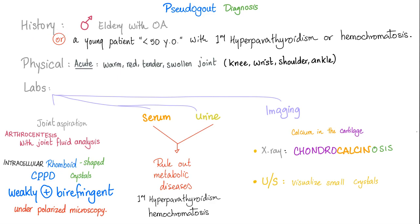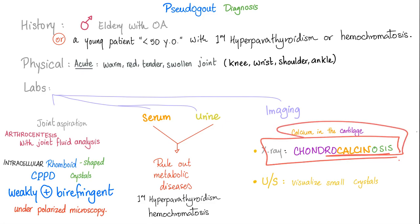How do you diagnose pseudogout? History: either an elderly patient with osteoarthritis — usually male — or a young patient (under 50) with primary hyperparathyroidism or hemochromatosis. Physical exam: acute, warm, red, tender, swollen joint — usually the knee. Labs: arthrocentesis showing intracellular, rhomboid-shaped CPPD crystals that are weakly positively birefringent under plain polarized light. Serum and urine can rule out primary hyperparathyroidism and hemochromatosis if the patient is young. Imaging x-rays: very important — you will find chondrocalcinosis.